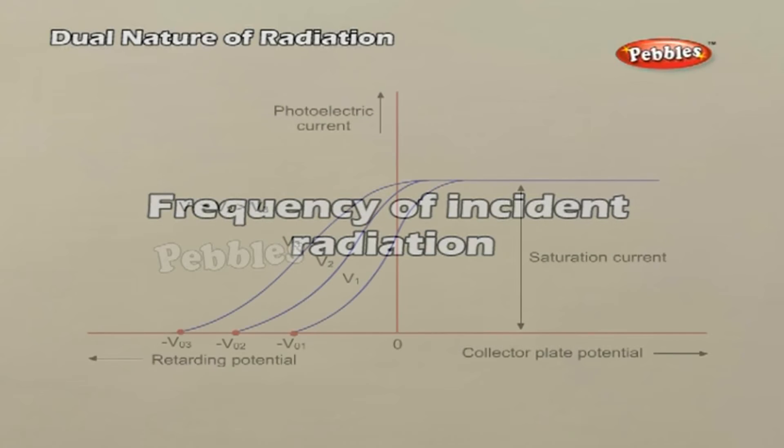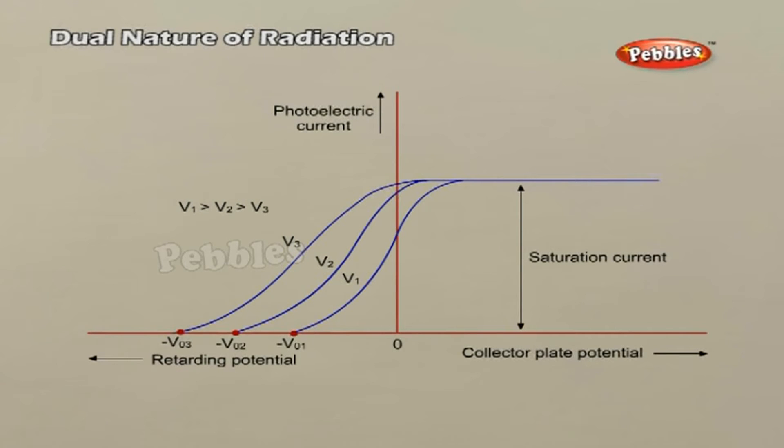Frequency of incident radiation. Let us now study the relationship between the frequency of the incident radiation and the stopping potential. We adjust some intensity of light variations at various frequency and study the variation of photoelectric current with potential. The resulting variation is shown in the graph. We notice that the stopping potentials are in the order V03, V02, V01. This implies that greater the value of the incident current, greater is the maximum kinetic energy of the photoelectrons.